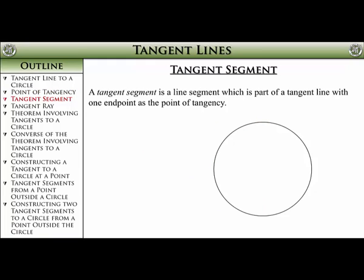A tangent segment is a line segment which is part of a tangent line, with one endpoint as a point of tangency. All of these are examples of tangent segments. It doesn't matter which endpoint is the point of tangency, but one of them has to be. There is also this part of the definition which says the tangent segments must be part of a tangent line, and all of these line segments are part of tangent lines. The reason for that part of the definition is so that this guy gets disqualified. This purple line segment is not a tangent segment, since it is not part of a tangent line. These are the only tangent segments. All are part of a tangent line. All of them have one endpoint as a point of tangency.